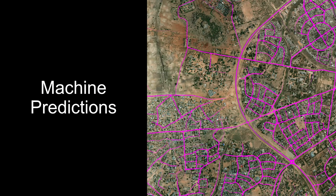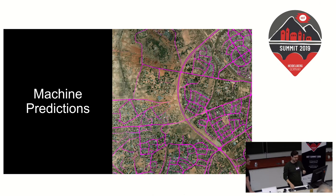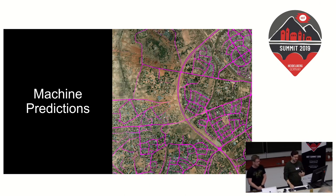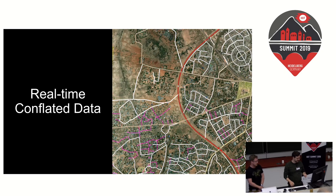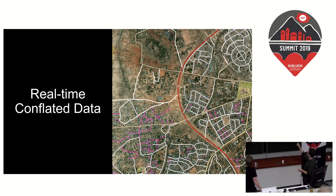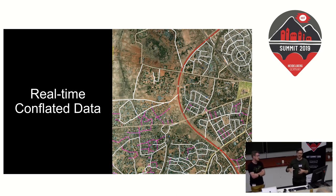So we've got the machine predictions and we want to make those useful. That big debug output with everything at once is just a lot to deal with at one time, and so that's why we built Rapid. Here's the actual conflated data in real time where we pull from OSM — white is all OSM, and the magenta layer is the predictions we've made that have been vectorized but are not yet in OSM — just the things that aren't there yet.